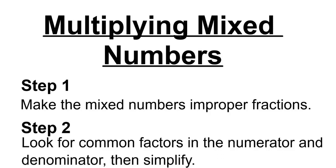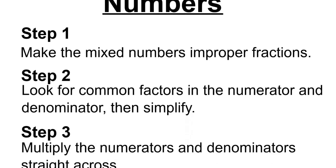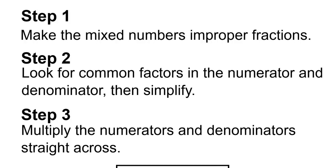Multiplying mixed numbers. Step 1: make the mixed numbers improper fractions. Step 2: look for common factors in the numerator and denominator, then simplify. And Step 3: multiply the numerators and denominators straight across.